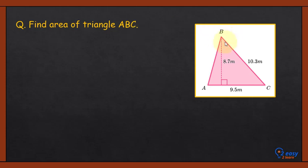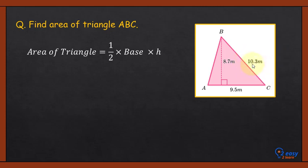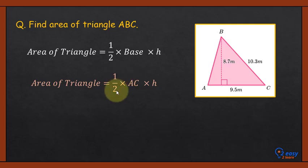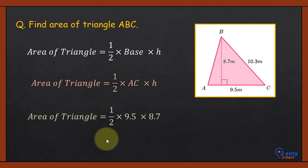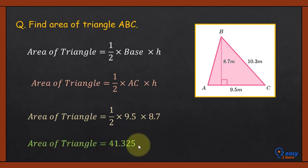Let's solve one question: Find the area of triangle ABC. AB is 8.7 m, AC is 9.5 m, and BC is 10.3 m. We need to select the base and height. The line from B perpendicular to AC is 8.7 m, so 8.7 is the height and AC is the base. We use AC = 9.5 m as the base and 8.7 m as the height. Area = 1/2 × 9.5 × 8.7 = 41.325. Rounded to three significant figures, the final answer is 41.3 m².